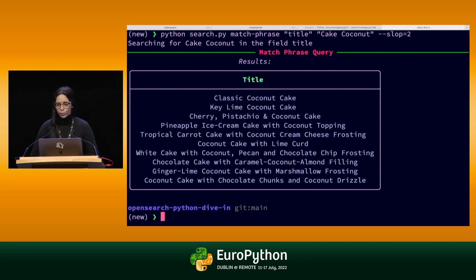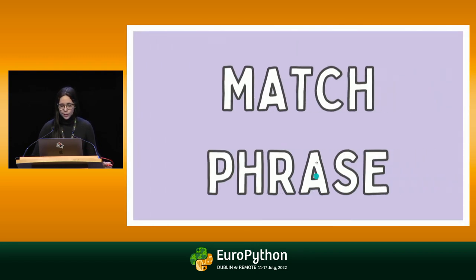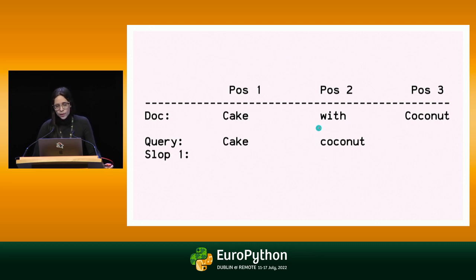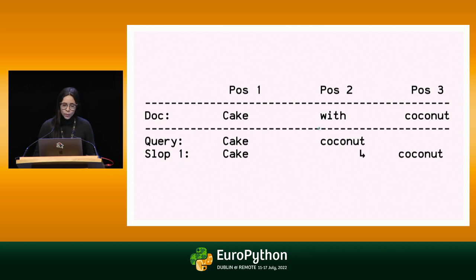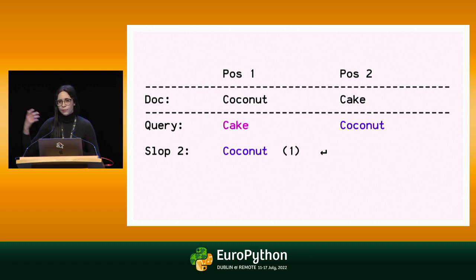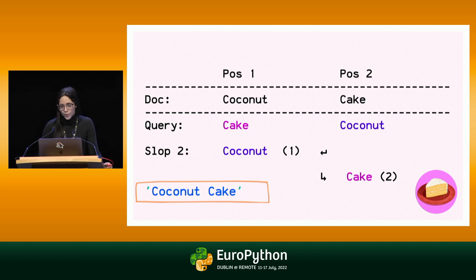Let me show you what the slop parameter actually means visually. Here is the document we queried and this is our query. With a slop of one, it tries different combinations — if I change the position of one word, would it still work? Yes, so coconut could be in position three with a distance of just one. Another example: if we have cake coconut where the words are swapped, with a slop of two it can swap position one to position two and position two to position one, and it finds the match. I hope that was a piece of cake to understand — this flexibility is important because you can't always expect the user to write exactly what they mean.